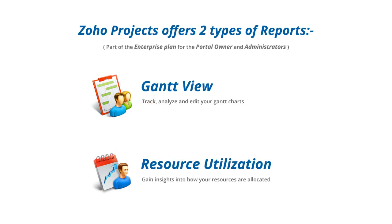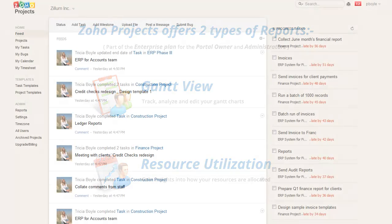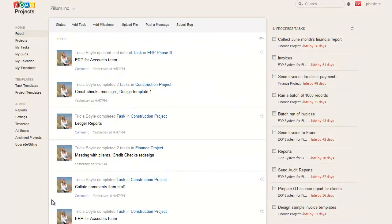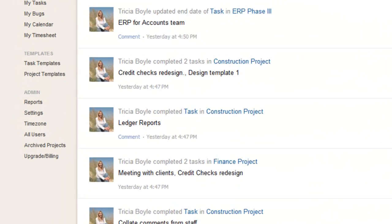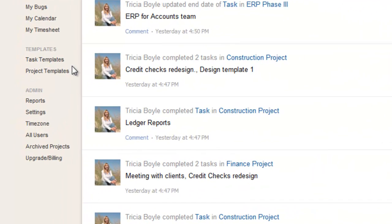Zoho Projects offers two types of reports across projects as part of the enterprise plan for the portal owner and administrators: Gantt Charts and Resource Utilization Charts. Once you log into Zoho Projects, you can find the Reports option under the Admin section.